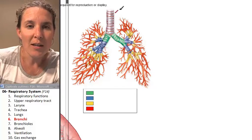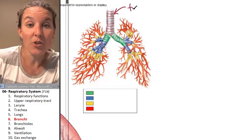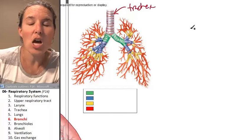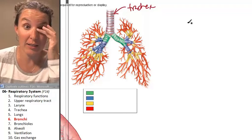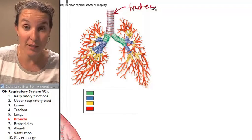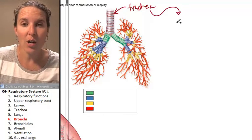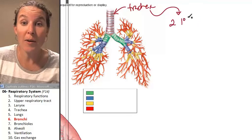Do you remember the name of that tube right there? That's your trachea. Okay, trachea, it bifurcates, splits into two pieces, into two primary bronchi.